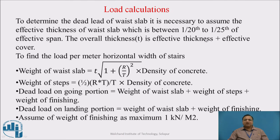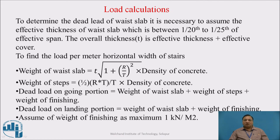The total thickness t is the effective thickness plus the effective cover. To find the total load per meter horizontal width of stair: weight of waist slab equals t multiplied by √(1 + (R/T)²) multiplied by density of concrete. Weight of steps equals (R/2) × T/T × density of concrete, to bring it to the horizontal portion. Dead load on going portion is weight of waist slab plus weight of steps plus weight of finishing. Dead load on landing portion is weight of slab plus weight of finishing. Assume the weight of finishing as maximum 1 kN/m².